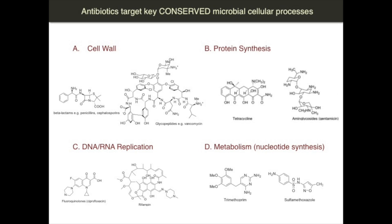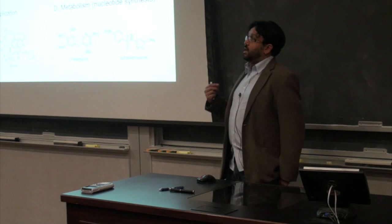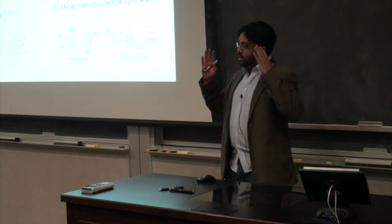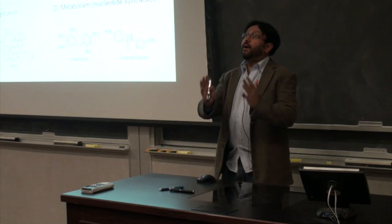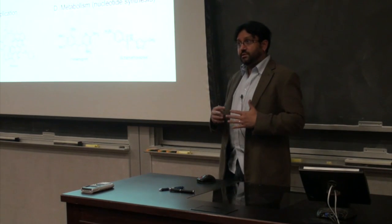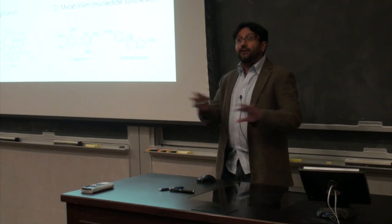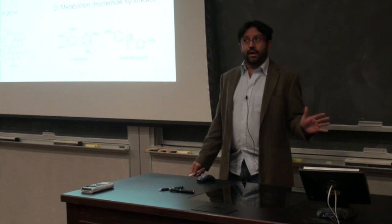Here are some of the key member chemicals that constitute antibiotics. Rather than focus on the details, what I wanted to observe is that the reason these chemicals work is that they hit extremely conserved cellular processes. Even though antibiotics are thought of as compounds to kill pathogens, because the processes they target are conserved, they do actually collaterally impact any microbe that they interact with.